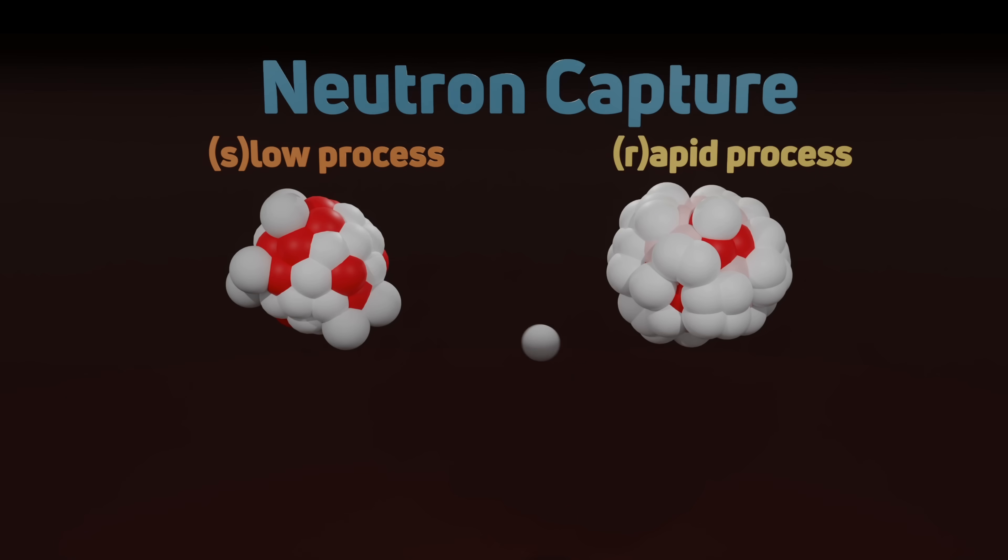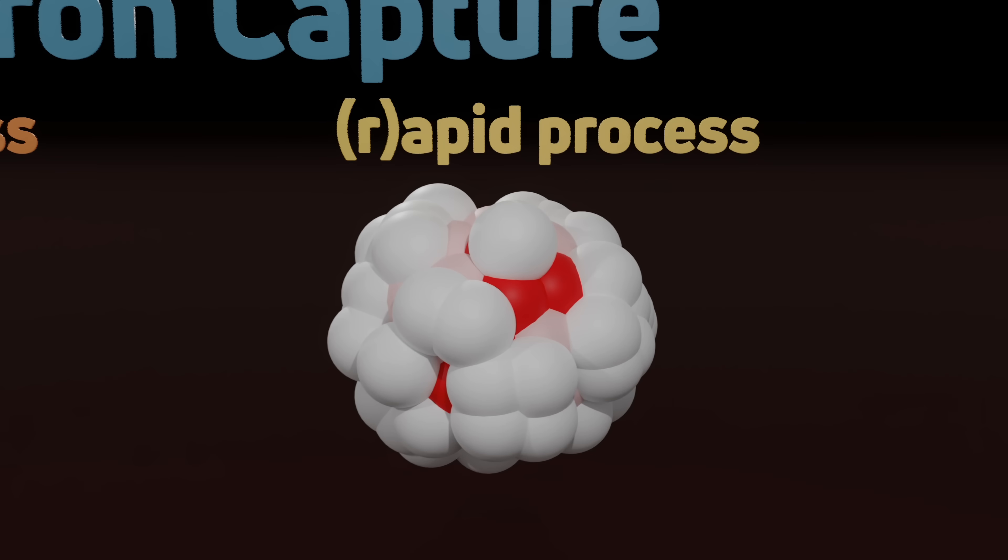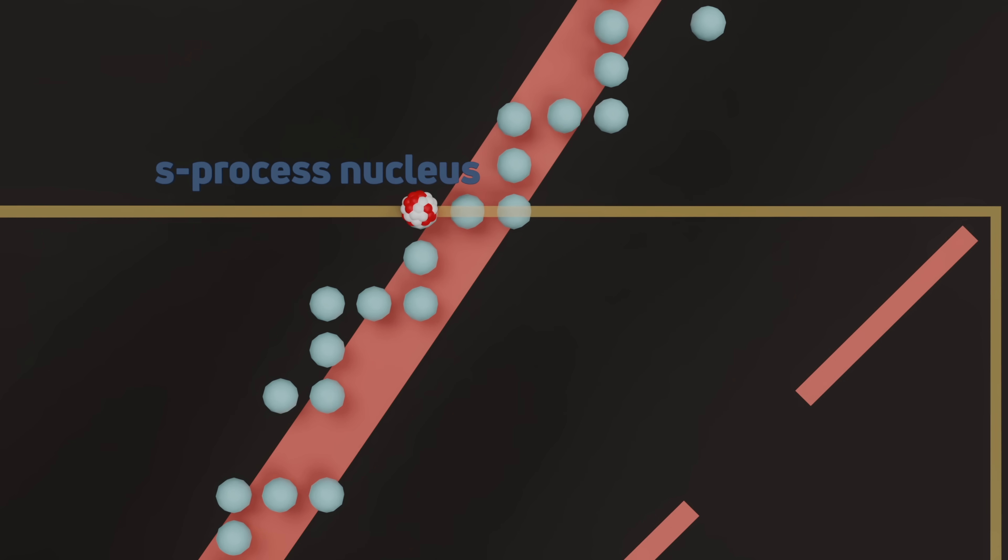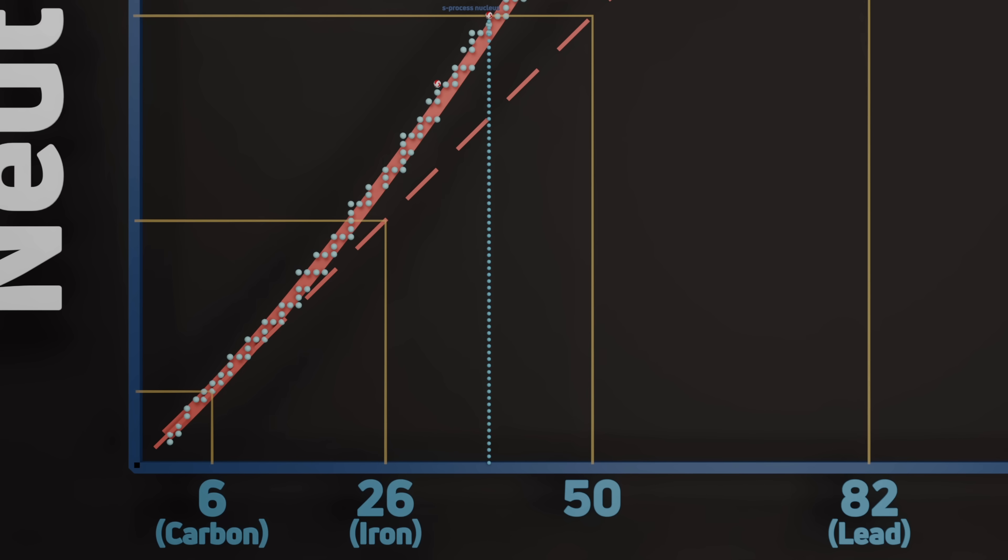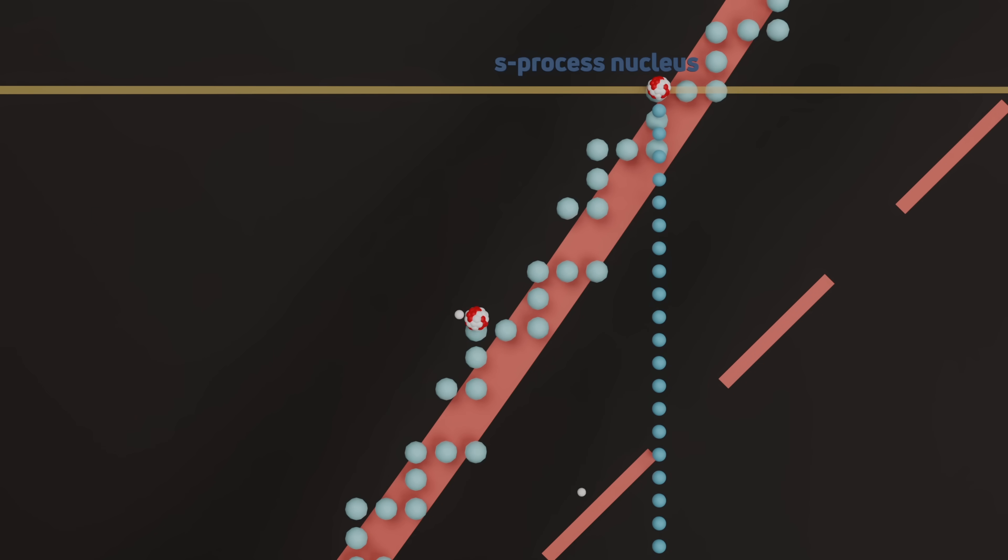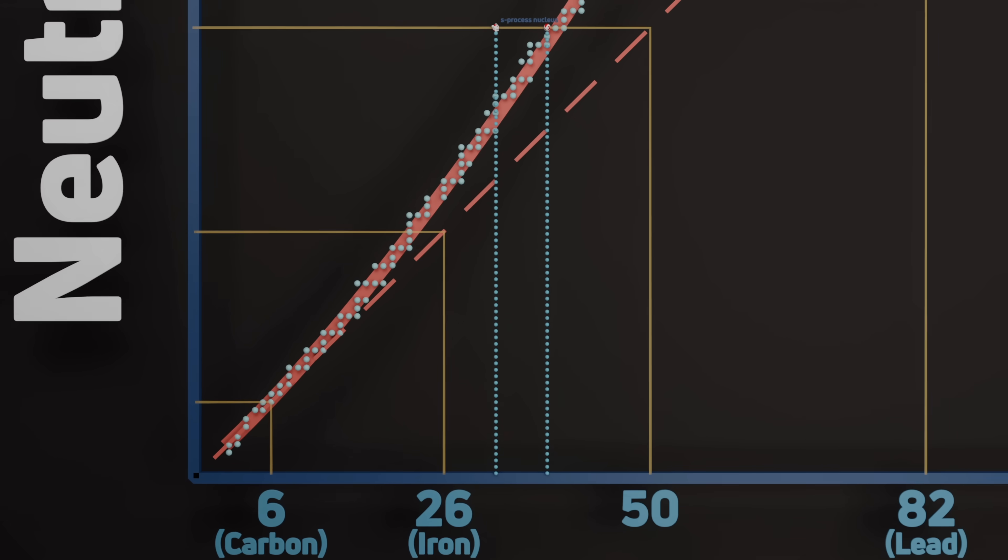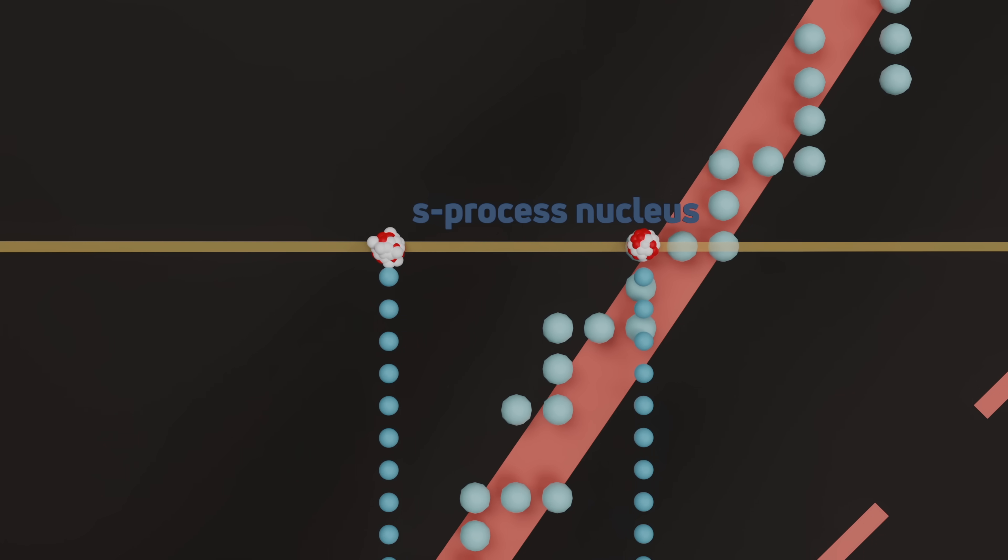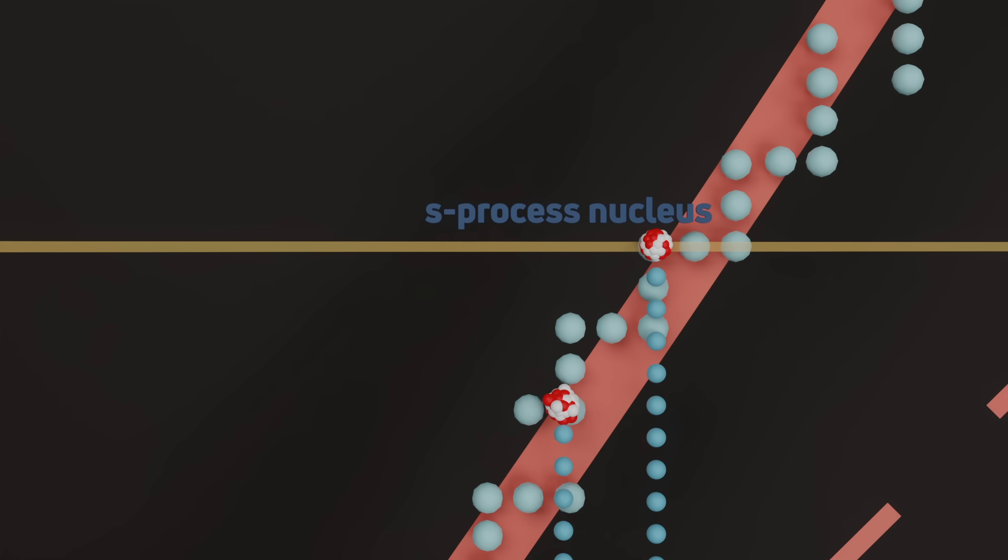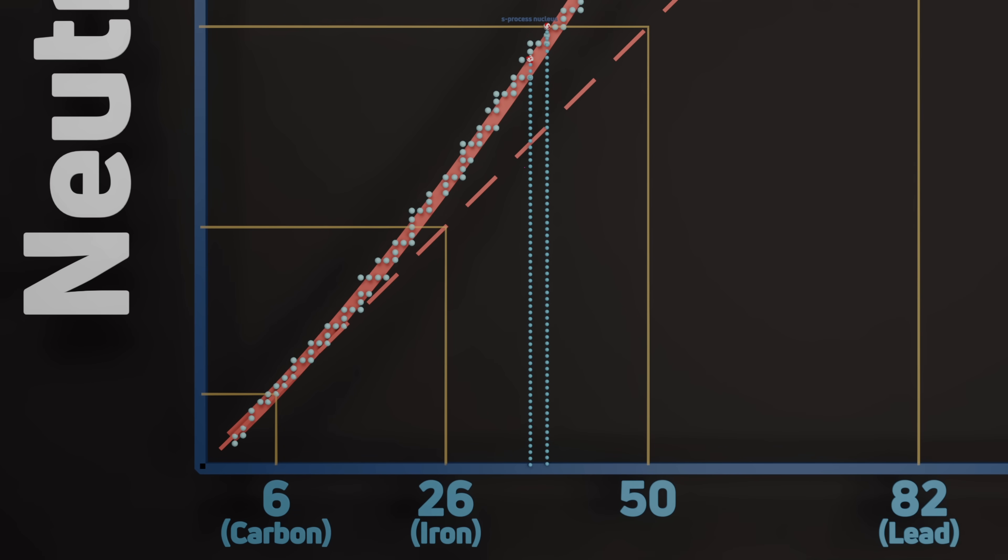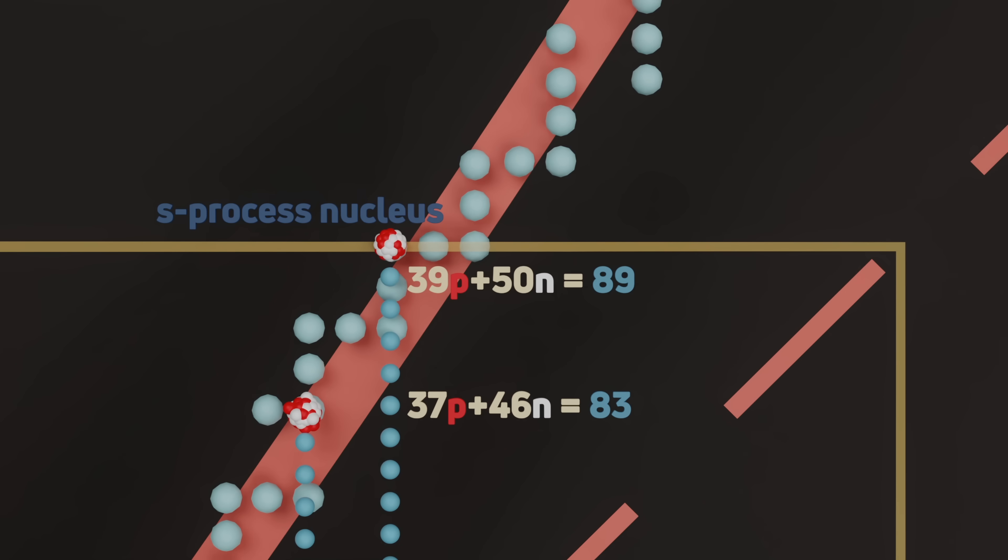The same thing happens during the R process, with a slight difference. When an S-process nucleus fills its neutron shell, there is a stable or proportional amount of protons. However, during the R process, since these neutrons are added faster than they can decay, when a neutron shell is filled, there are fewer protons than an S-process nucleus with the same amount of neutrons. This means the nucleus is very unstable and neutrons will start to decay, turning into protons. And since the number of protons was fewer to begin with, the total mass of this nucleus is less.